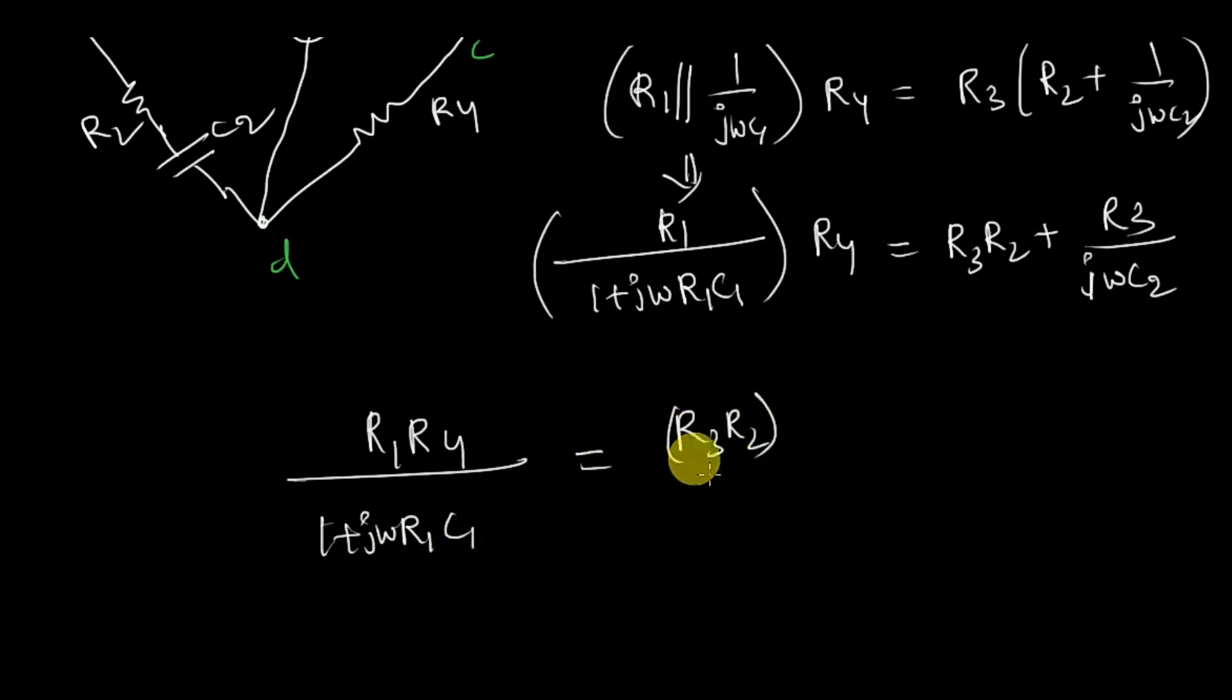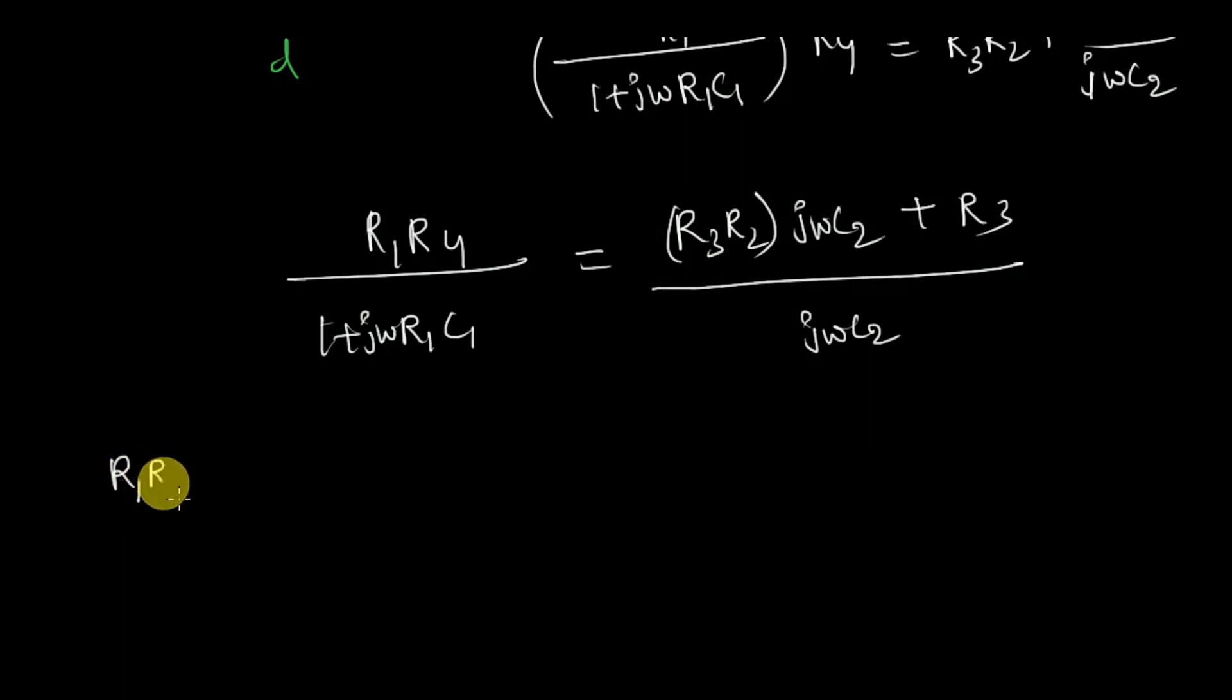R2 into j omega C2 which is equal to R3 plus j omega R2 R3 C2 into 1 plus j omega R1 C1. So you can look here, here it is only imaginary part, so there is no particular real part here. Now what I am going to do is equate these imaginary parts, or equate the real part present in this to zero. It is simple, I think.